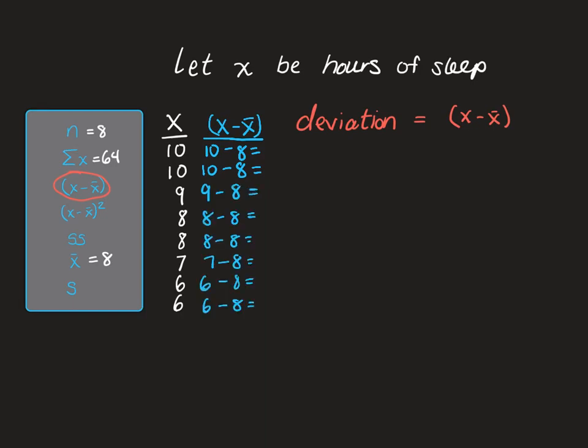So my deviation for the first score is 2 because the raw score is 2 units above the mean. The same is true for the second raw score. The deviation for the third raw score is 1. For the fourth raw score is 0. For the fifth raw score is 0. For the sixth raw score is negative 1. For the seventh raw score, negative 2. And for the last raw score, the deviation is negative 2.